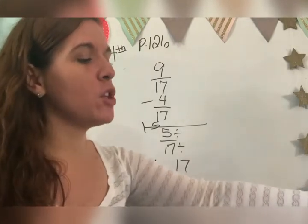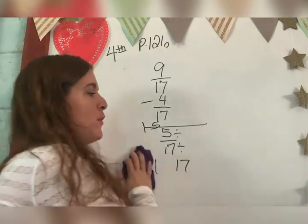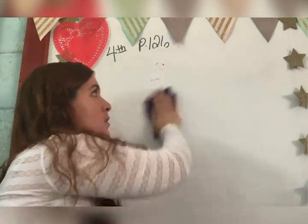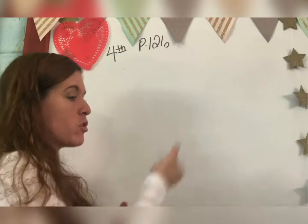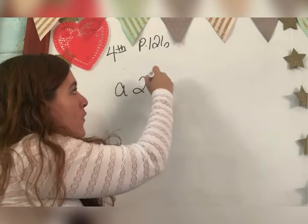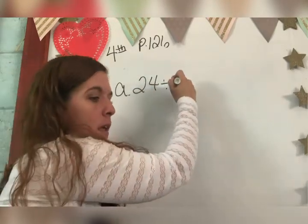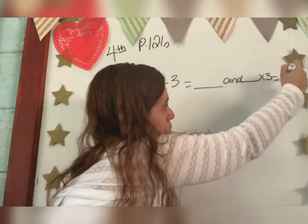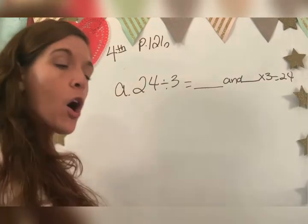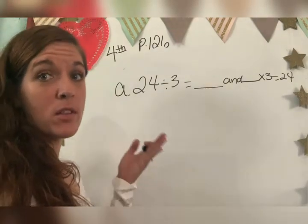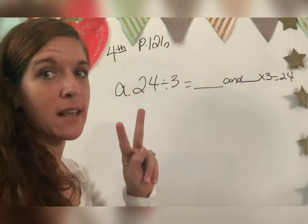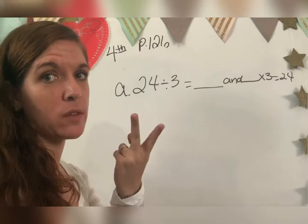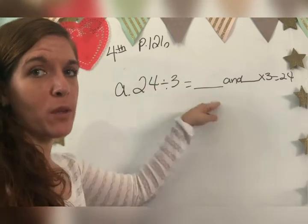Now look at number seven. You guys know how to do this, but it looks a little funny, right? A little weird. So I just want to make sure that you understand what to do. It says twenty-four divided by three equals this, and this times three equals twenty-four.